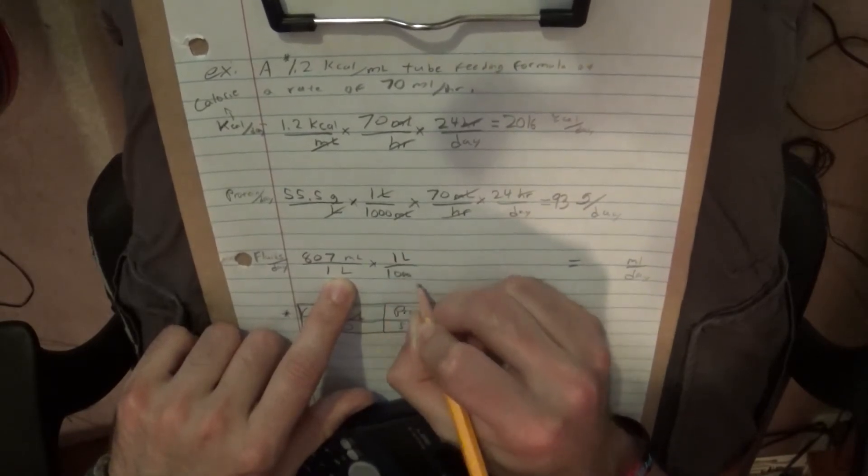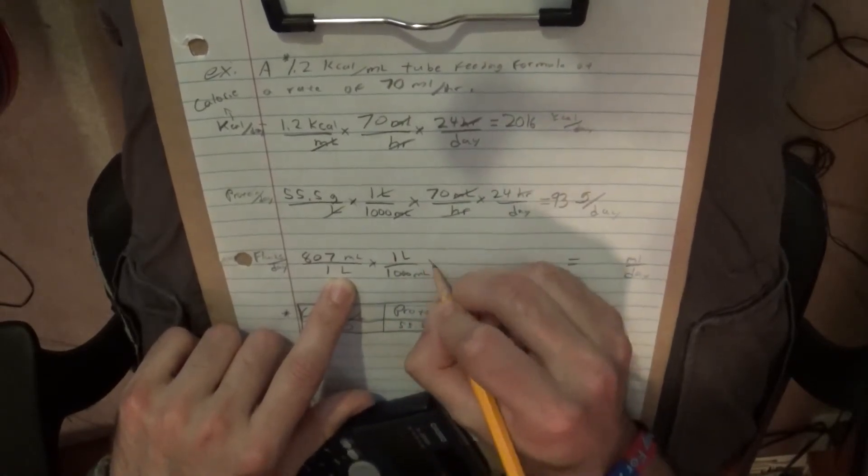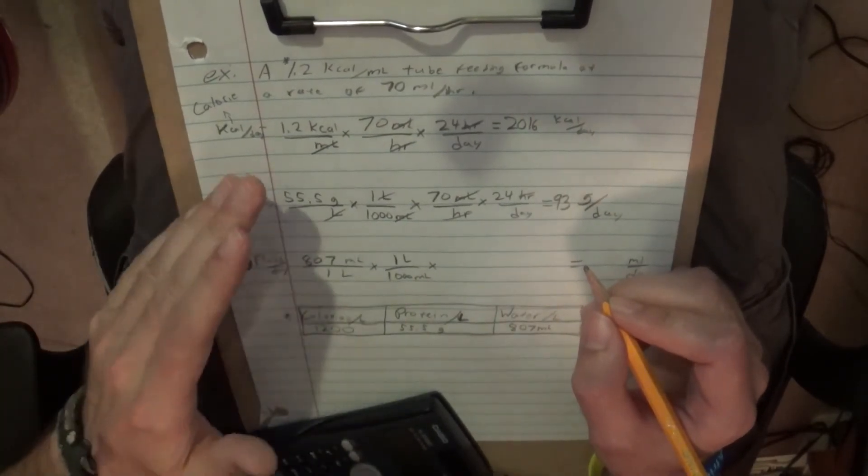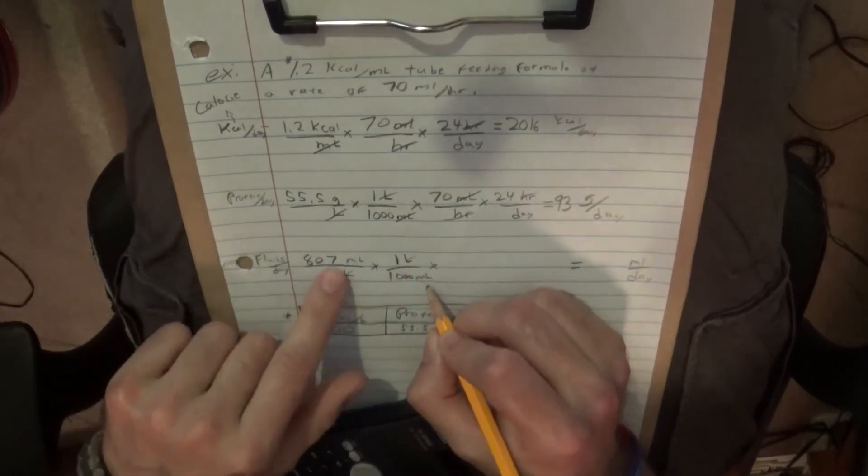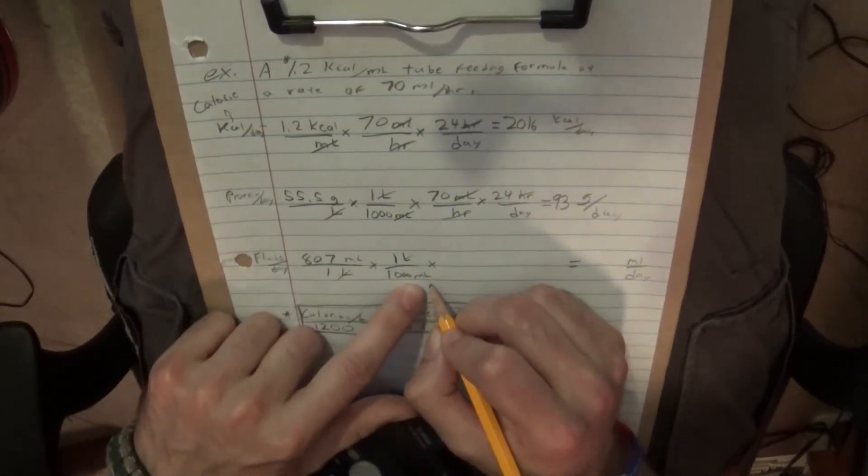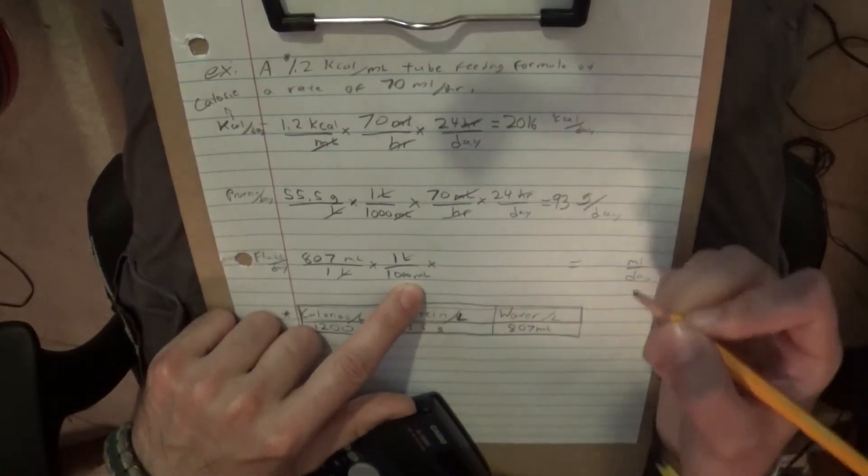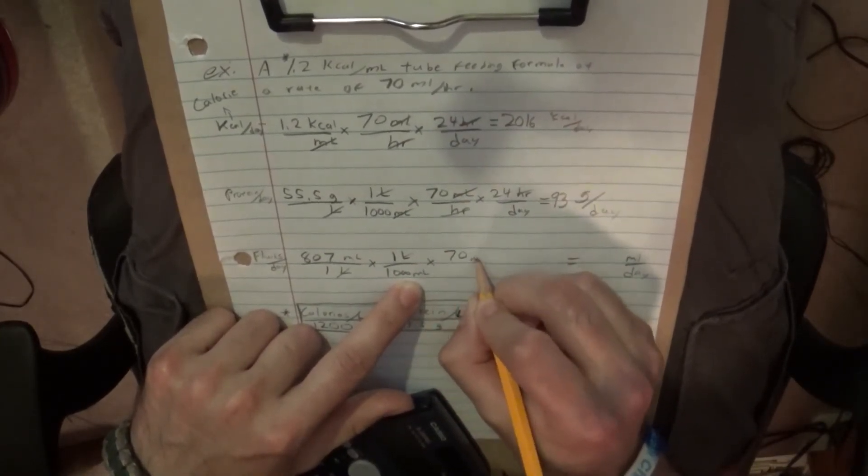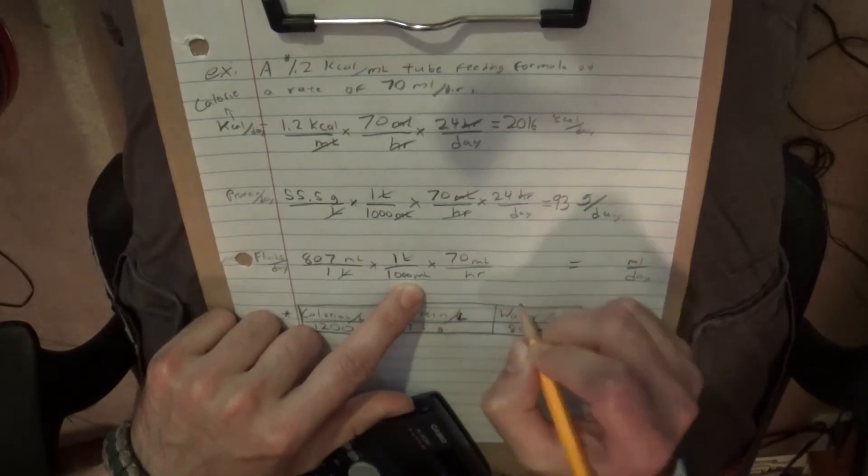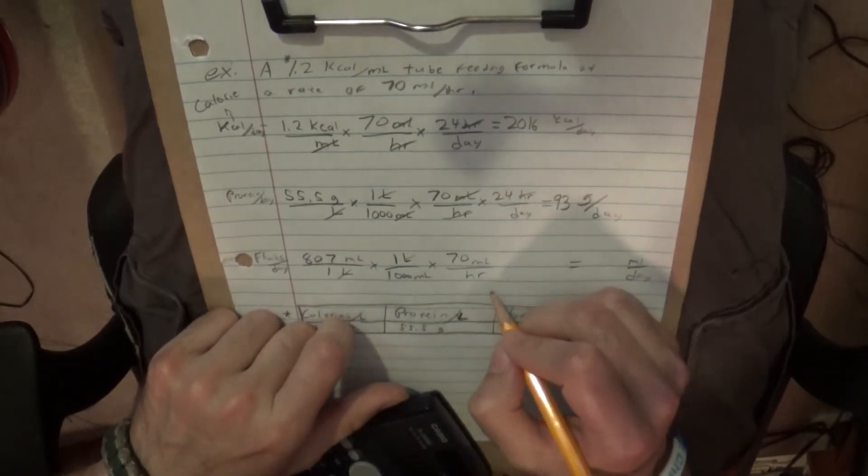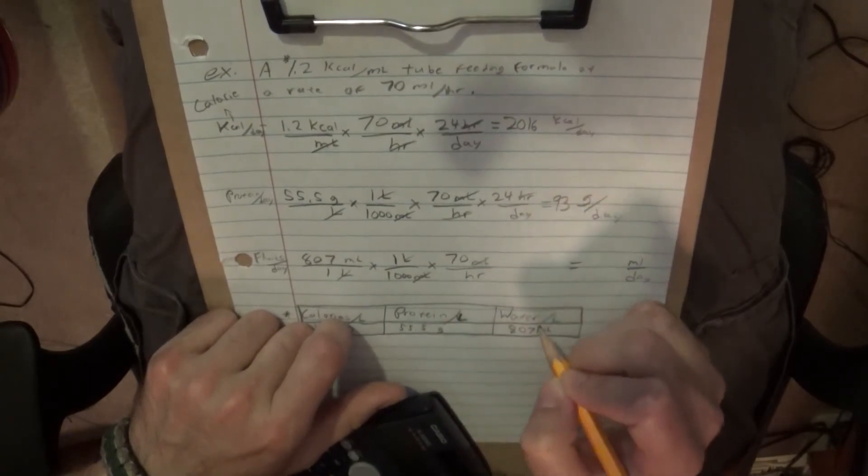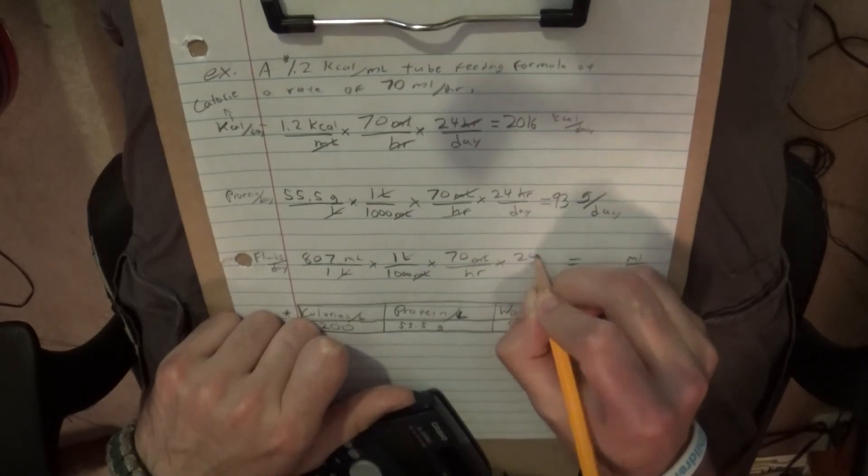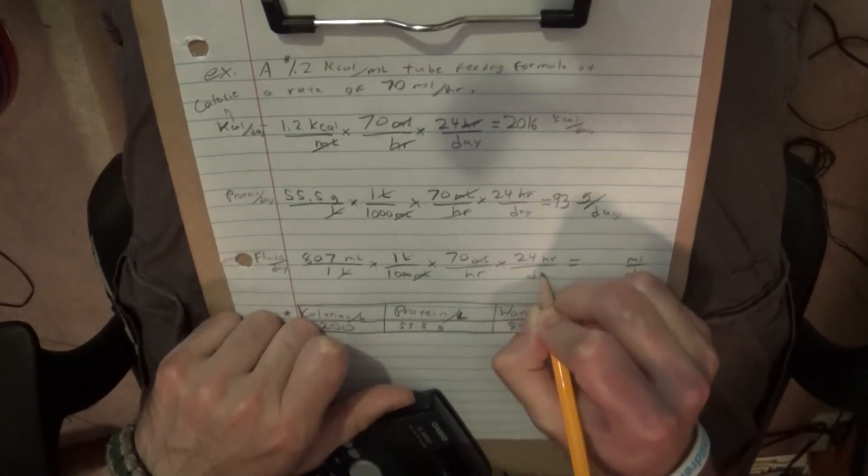So, one liter is 1,000 milliliters. We've got to find out, well, see, here's what's tricky about this, is we just canceled out liters, and now we're left with milliliters over milliliters. So to solve this one, we have to go back to the rate once again, 70 milliliters per hour, and it's actually going to make it to where we have several milliliters to work with, but they're going to cancel out to where there's milliliters per hour now. And then we go back to 24 hours per day.